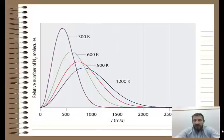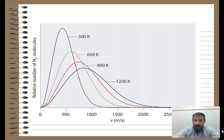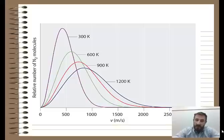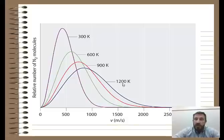We mentioned that temperature is proportional in Kelvin to the average kinetic energy. All gas molecules are not moving at the same speed. Here's an illustration showing a gas at 300 K, 600 K, 900 K, and 1200 K — notice all of those are in Kelvin.